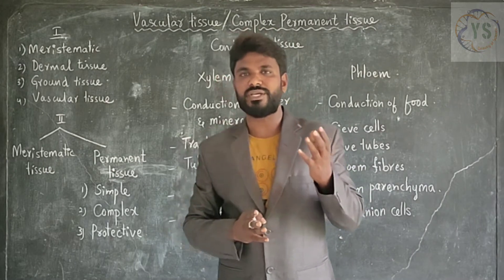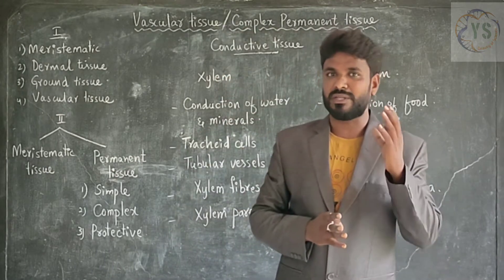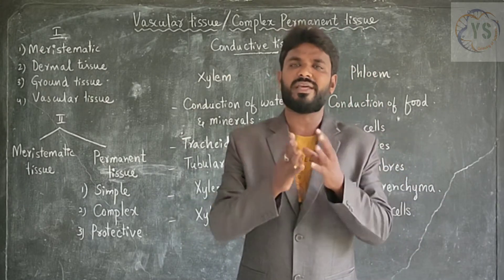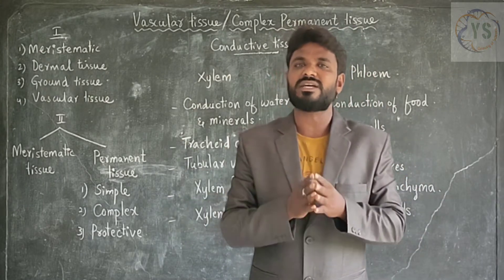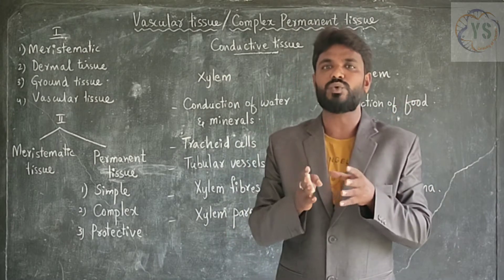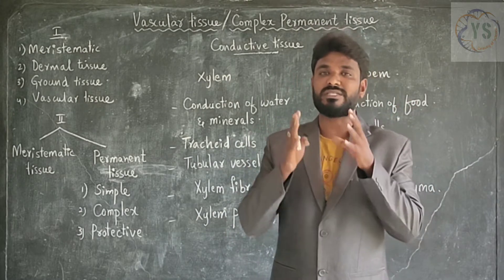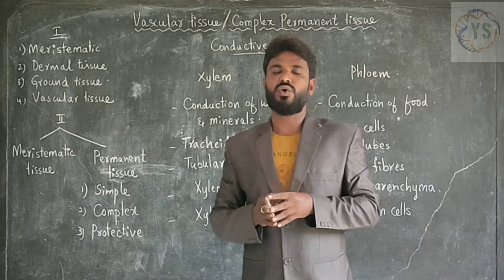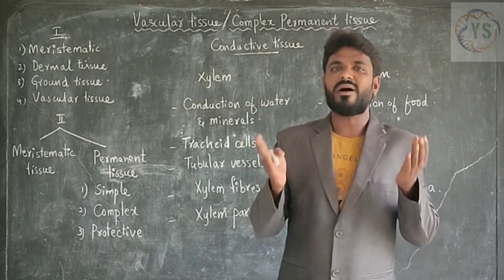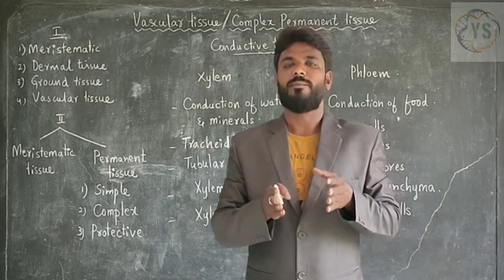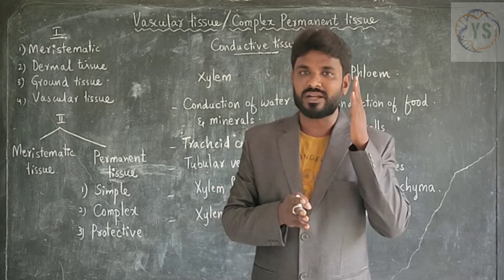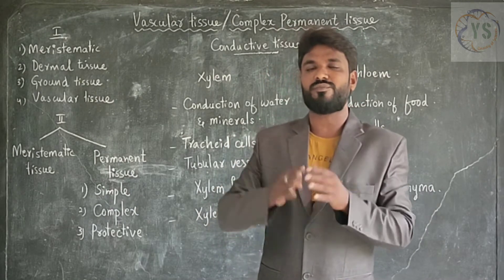What is tissue? Tissue is a group of cells having similar structure and function. Generally, in all organisms, cells are present. These cells are grouped together to form a tissue to carry out a special or particular function. It may be plant or it may be animal — all organisms are made of tissues.